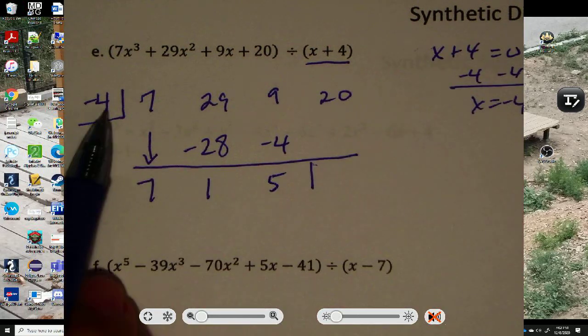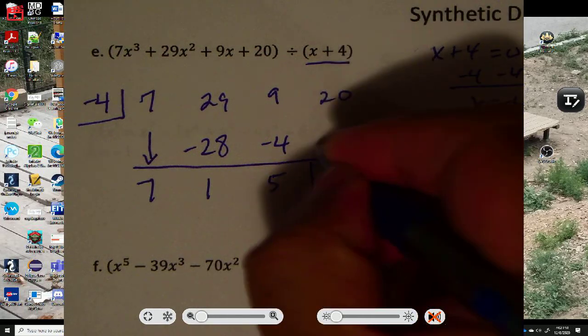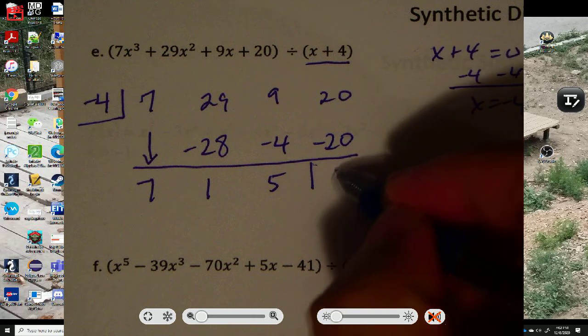And then take the negative 4, multiply by 1, and you get negative 4, and you put it here. And then you add 9 plus negative 4 is 5. And then you take your negative 4, multiply by 5, and then you put the product here. So that'll be negative 20. And then you add, and I get 0.